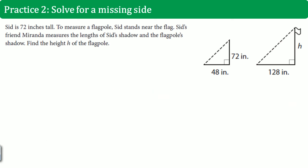Alright, so let's go over the answer. Sid is 72 inches tall to measure a flag post. Sid stands near the flag. Sid's friend Miranda measures the length of Sid's shadow and the flagpole's shadow. Find the height, h, of the flagpole.